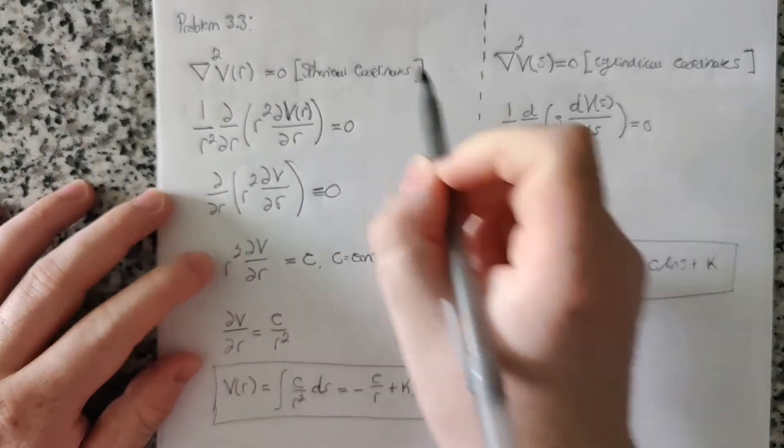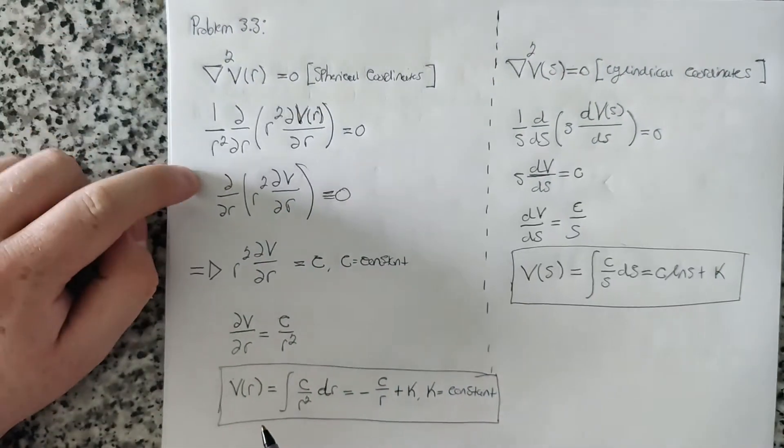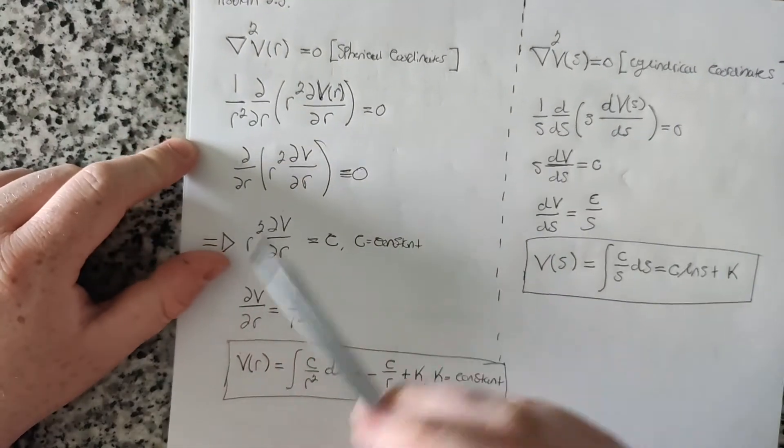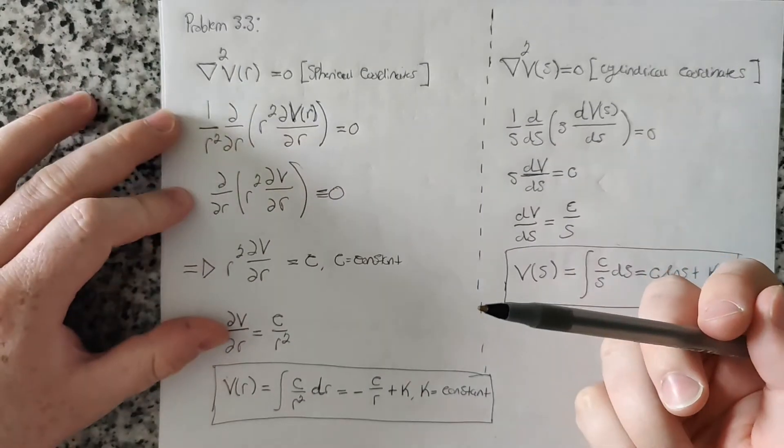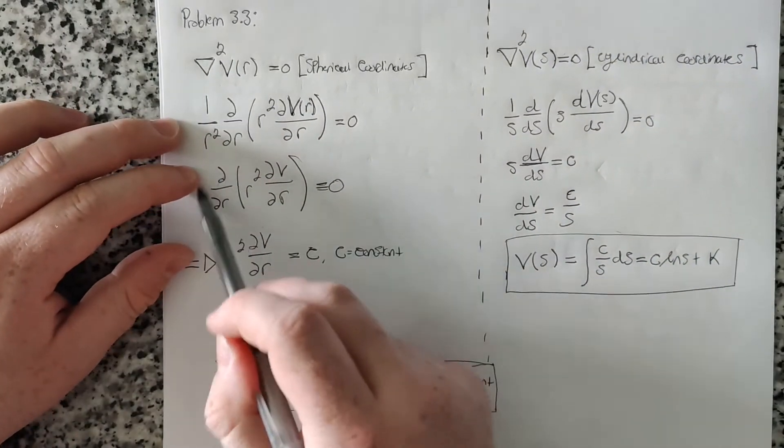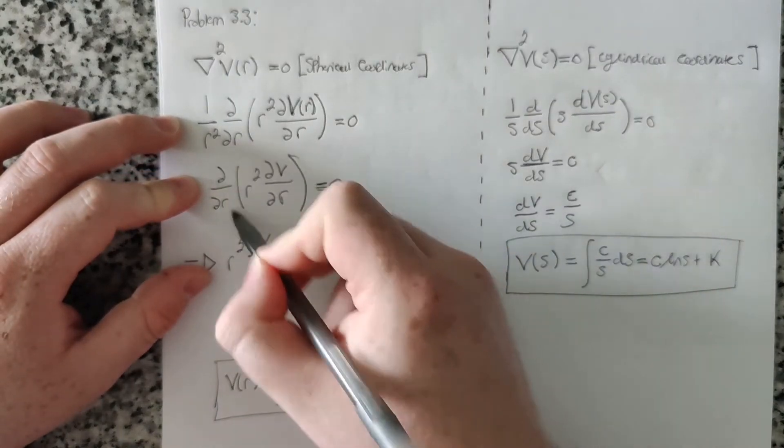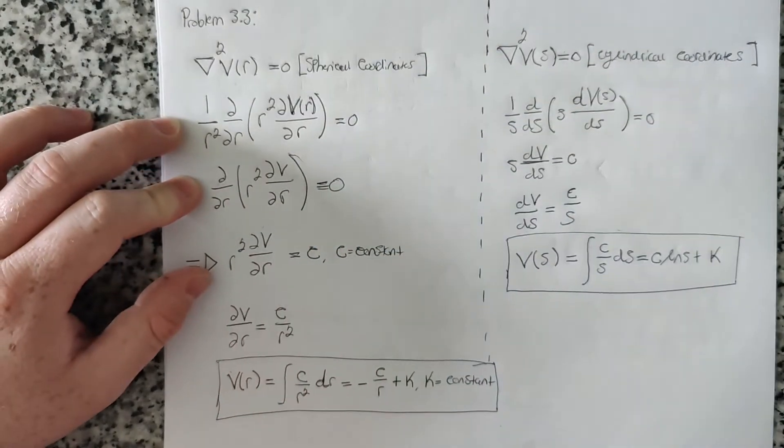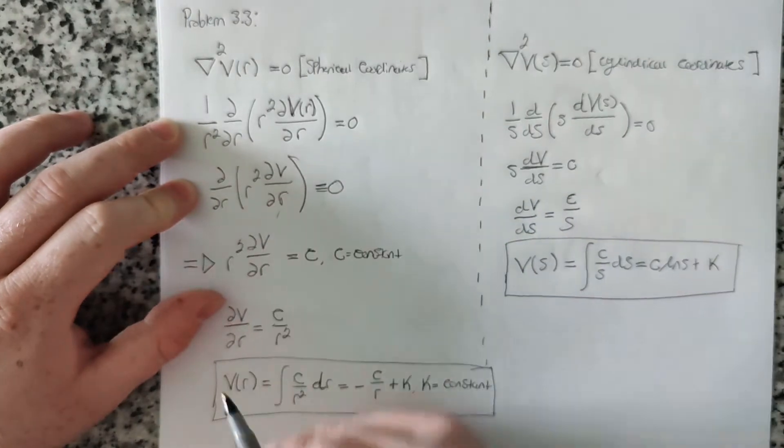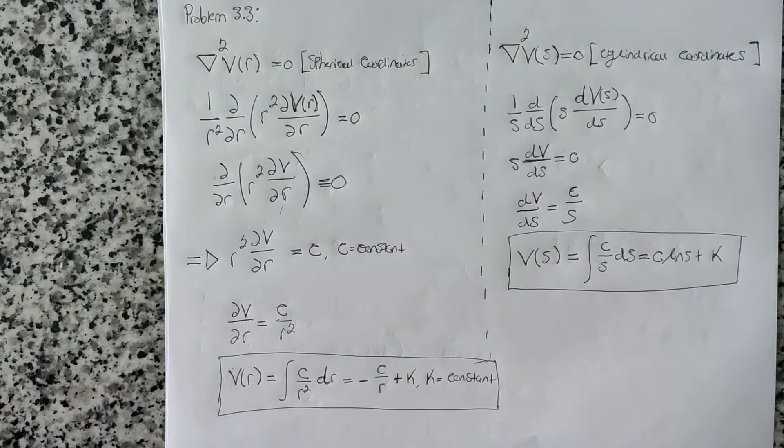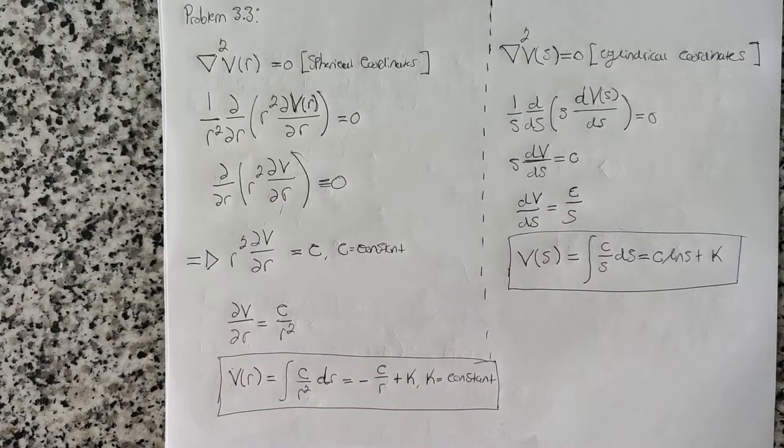So we can get rid of this one over R squared term by multiplying by R squared. Simple as that. And then we have that the derivative of this whole term inside here is zero. And what does that mean? If the derivative of something is zero, the derivative of a function is zero, that means that the slope is zero, which means that the function must be a constant function if the slope is zero.